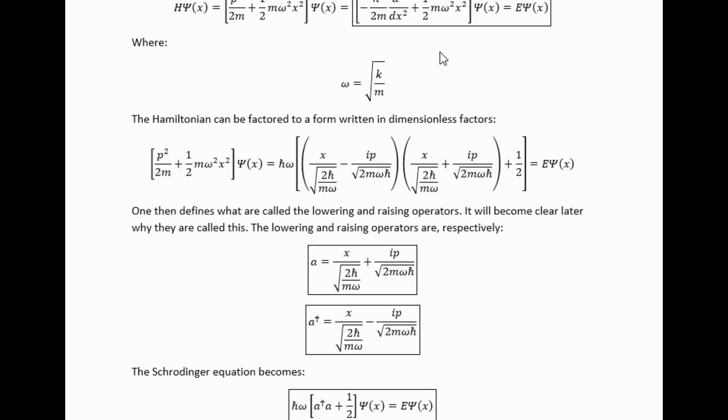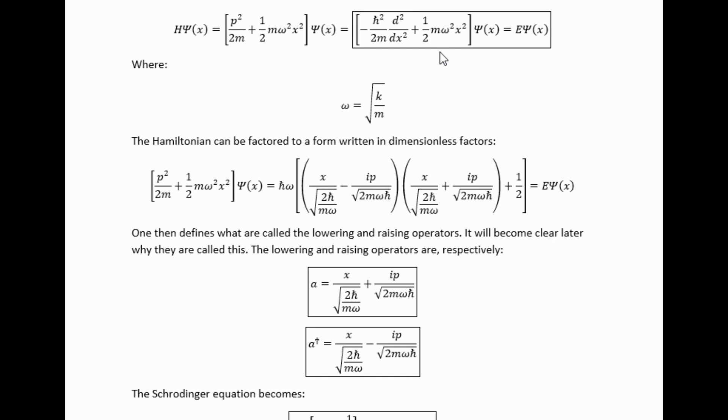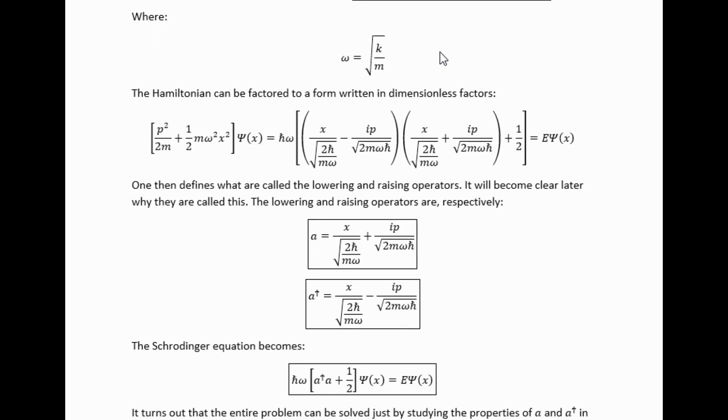Now we're going to take the operator method, the ladder operator method, to solving this problem. Basically, what that means is we can break apart the Hamiltonian into two factors, two differential operator factors that are Hermitian conjugates of each other. And it turns out these particular operators have amazing properties, properties that will allow us to, through rather wonderful cleverness, solve out this problem not only completely, but also in a way that reveals some very nice intuition.